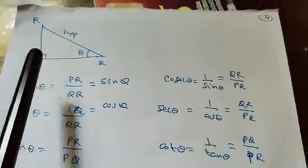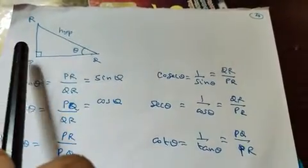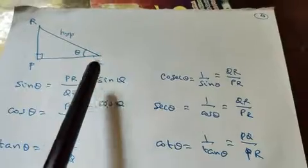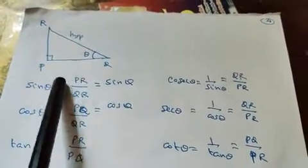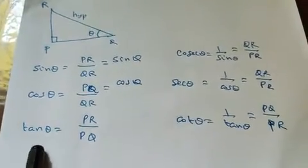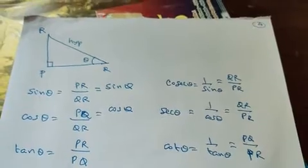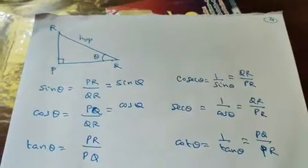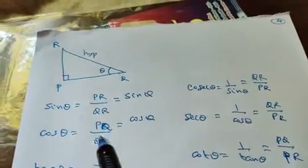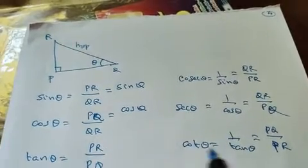For example, this triangle is P, Q, R. What is sin theta? The opposite side of theta is PR. The hypotenuse is QR. So sin theta equals PR by QR. What is cos theta? The adjacent side of theta is PQ by QR — adjacent side by hypotenuse. What is tan theta? Opposite side by adjacent side — that is PR by PQ. What is cosec theta? Reciprocal of sin theta — 1 by sin theta — that is QR by PR. What is sec theta? 1 over cos theta — that is QR by PQ. What is cot theta? 1 by tan theta — that is PQ by PR.